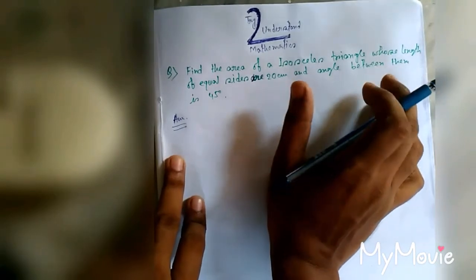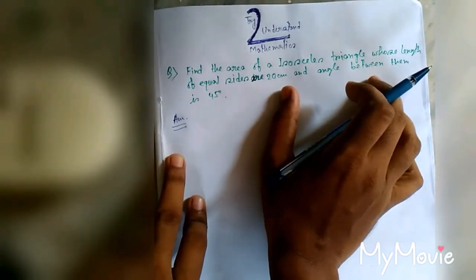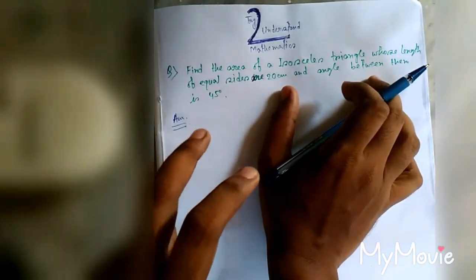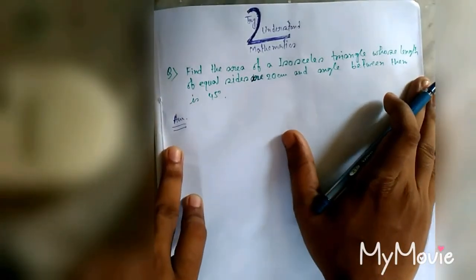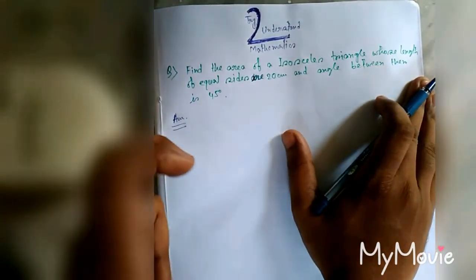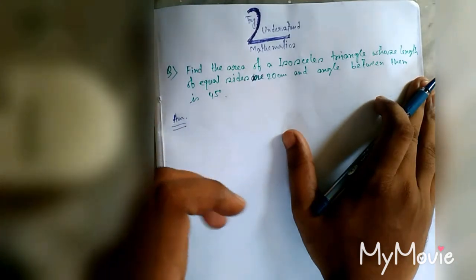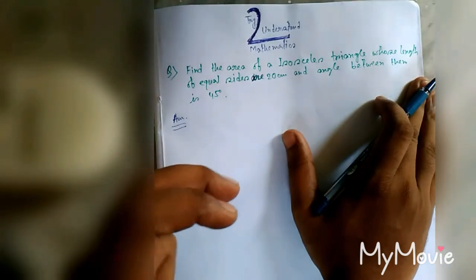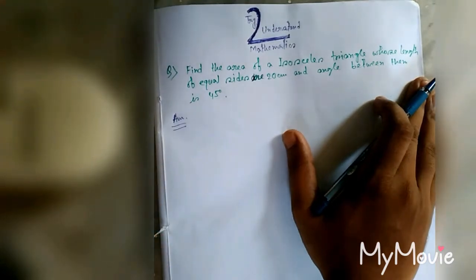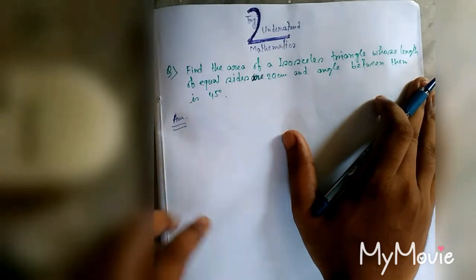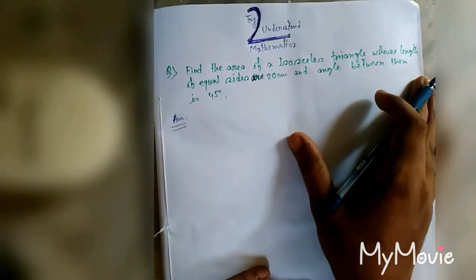Now first, know about what is an isosceles triangle. An isosceles triangle is a triangle whose two sides are equal length. When two sides are equal, then this triangle is isosceles triangle and angles with the base with equal sides are the same.